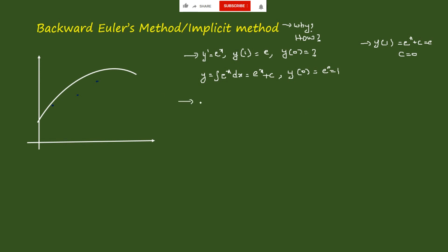But if you have a more complex equation like y' = 2·sin(2y) + x·ln(y), given f(x1) = y1 and you have to find the value of y(x0), then we use the Backward Euler's method.